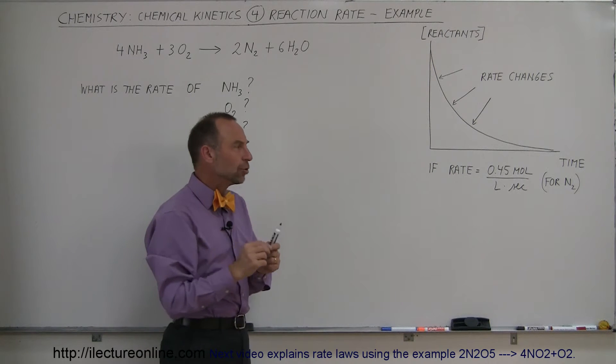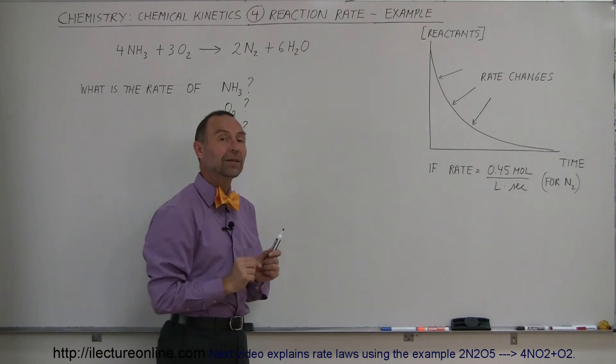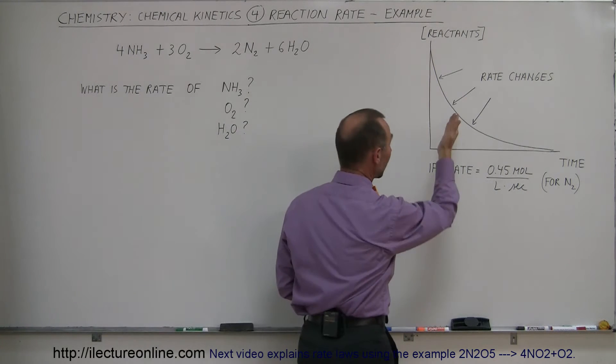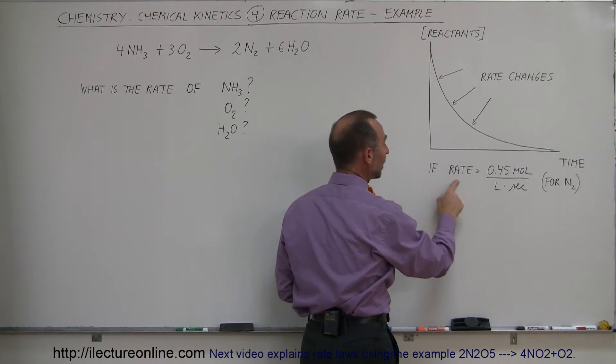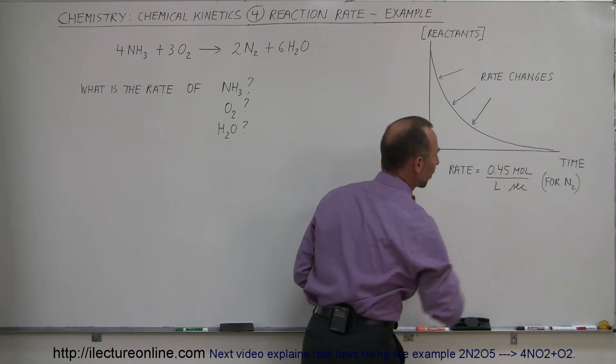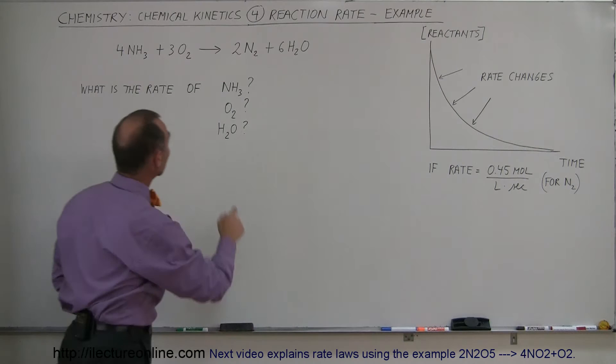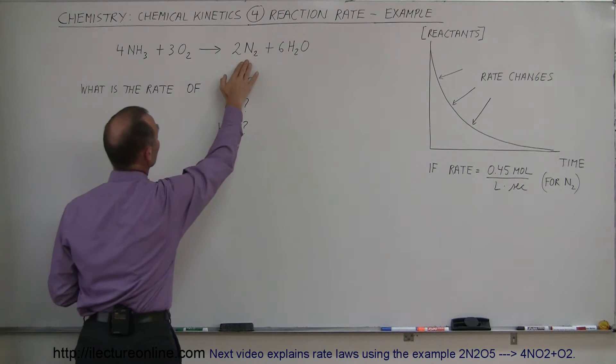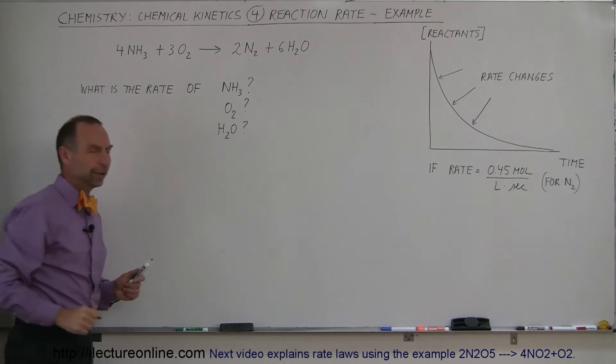So when we talk about the reaction rate, usually we talk about the rate at a particular moment in time, because a little bit later it's going to change. So let's say that we're at some point in our reaction, and the rate for the nitrogen gas in the reaction is 0.45 moles per liter per second. Here's the reaction we're talking about. It's ammonia mixed with oxygen forming nitrogen gas and water.